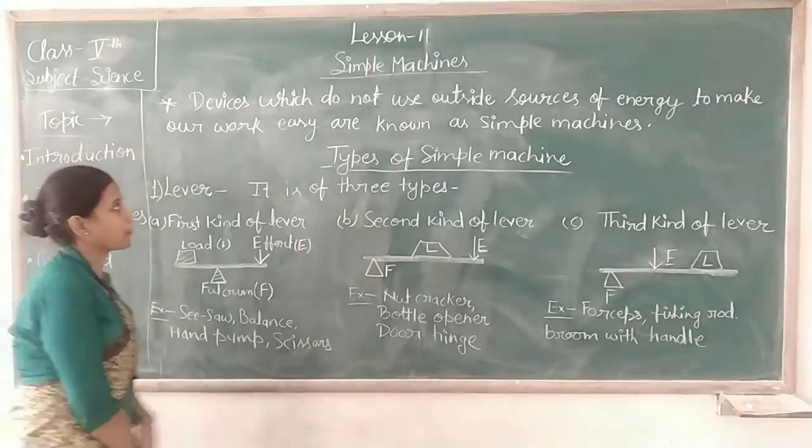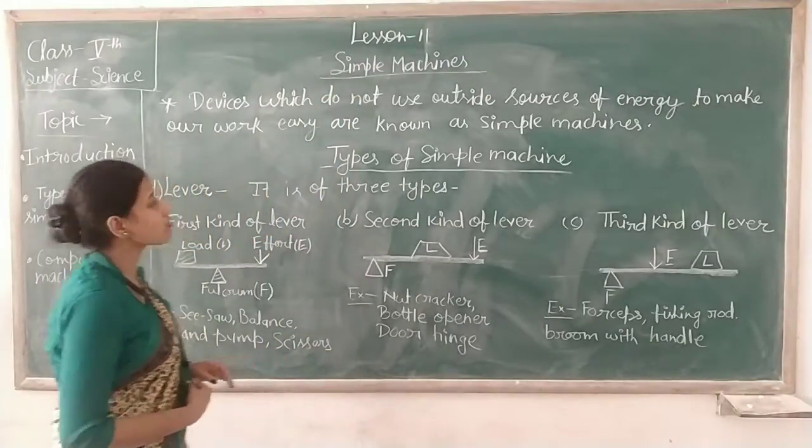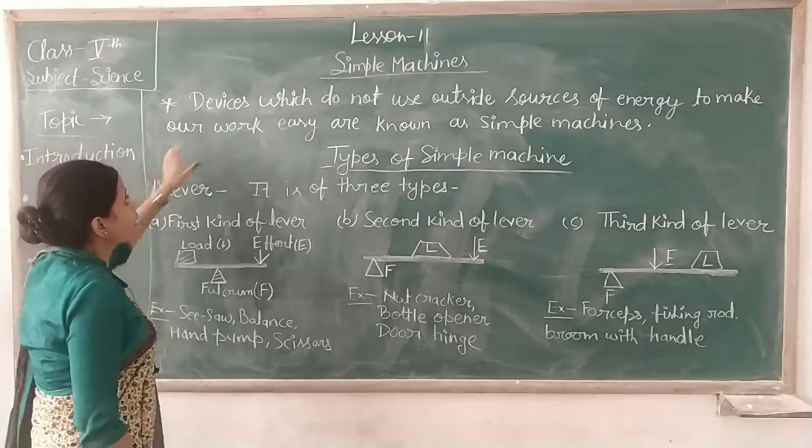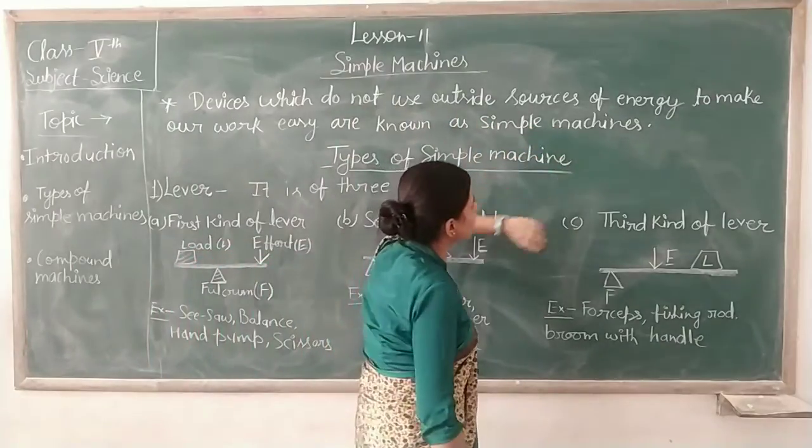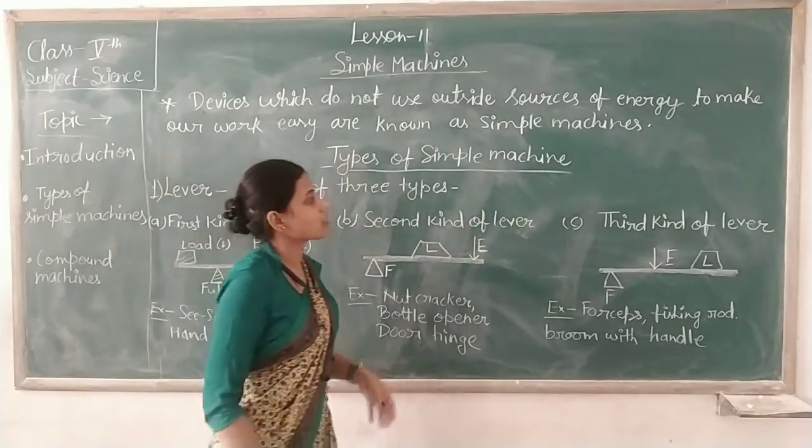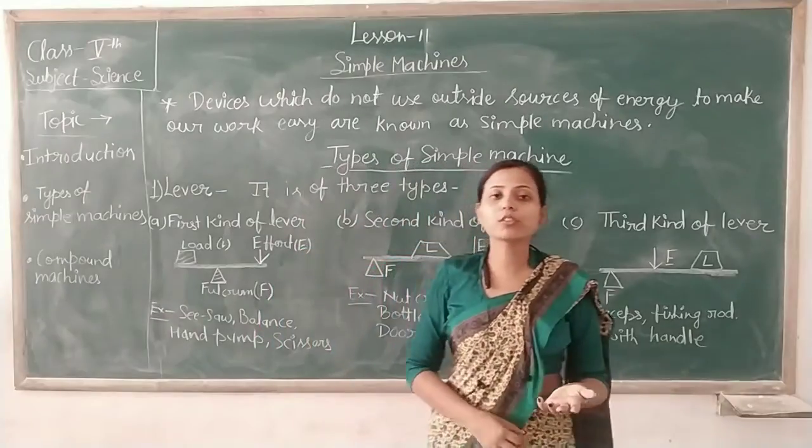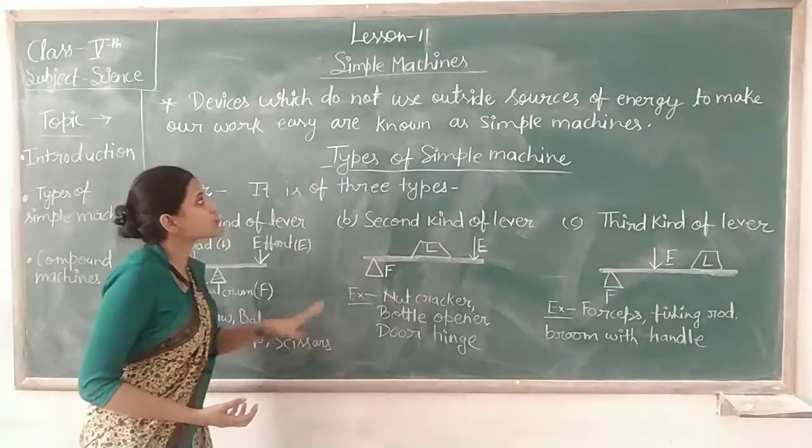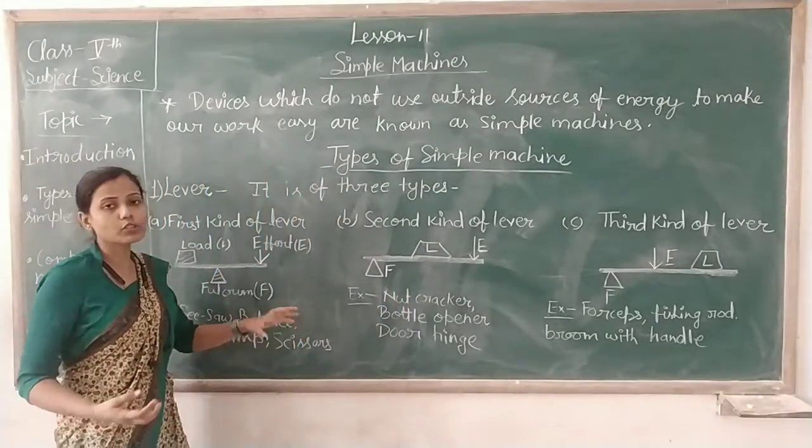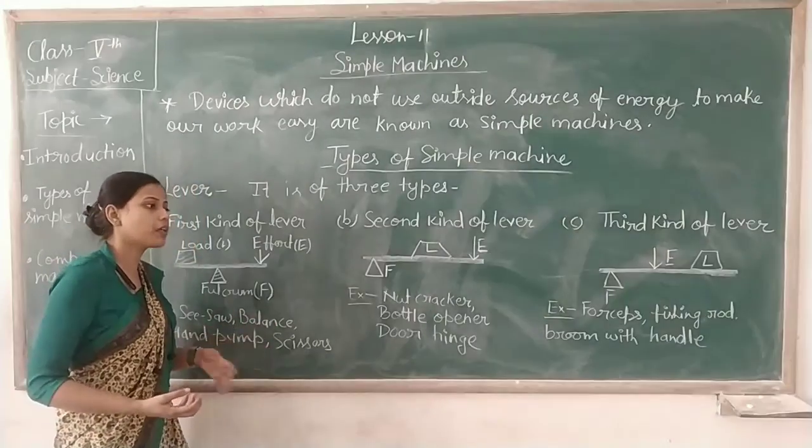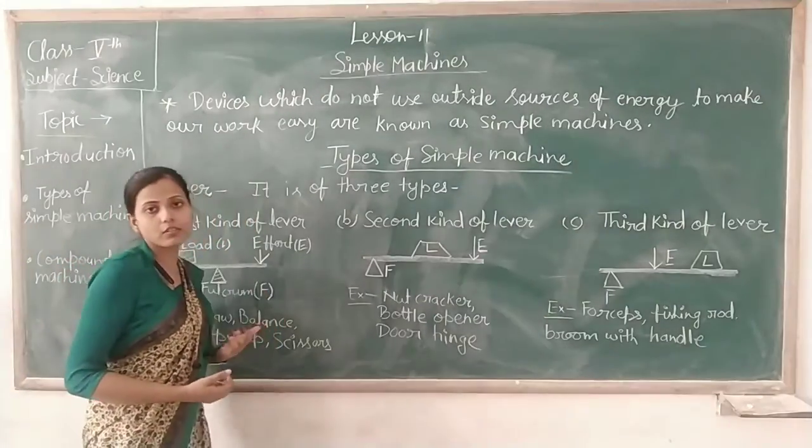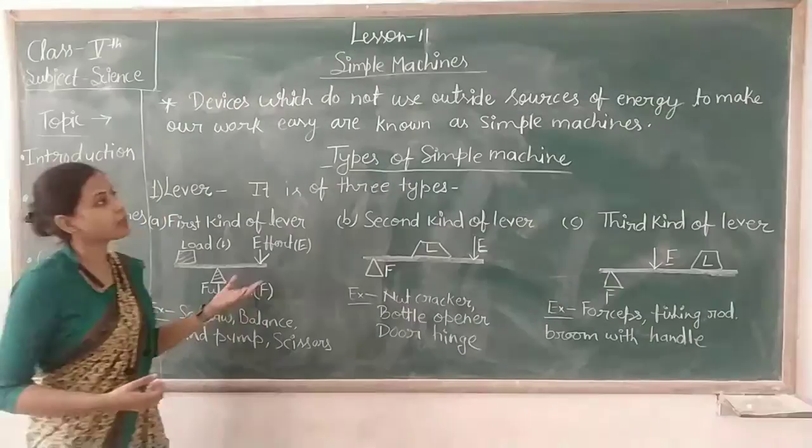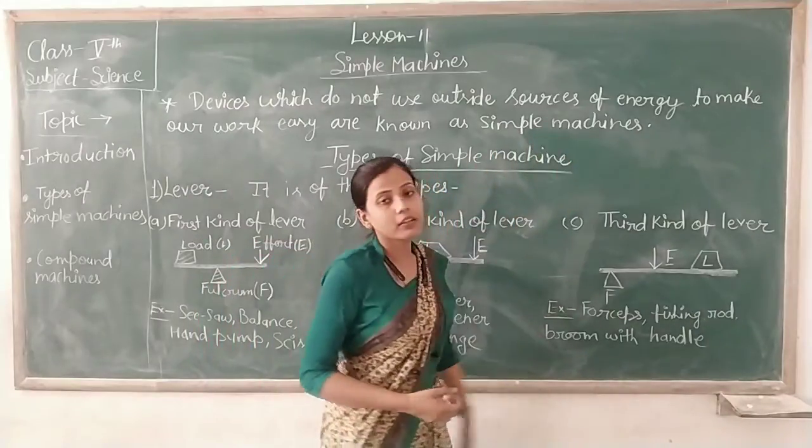Today we will start a new chapter, Simple Machines. So let's start this chapter. First we will know about simple machines. Machines کیا ہوتی ہیں? Devices which do not use outside sources of energy to make our work easy are known as simple machines. Machines وہ چیزیں ہوتی ہیں جو ہمارے کام کو آسان بناتی ہیں. ہماری محنت کو کم کرتی ہیں. Simple machines وہ ہوتی ہیں جو کسی outside source کا use نہیں کرتی. وہ اپنے میں ہی sufficient ہوتی ہیں کام کو کرنے کے لیے. ایسی machines کو ہم simple machines کہتے ہیں.